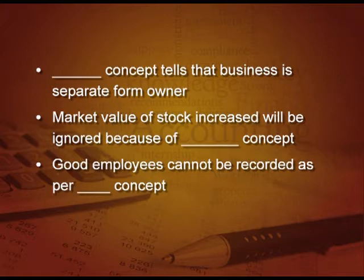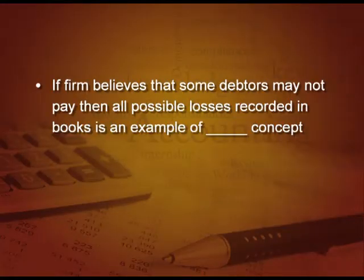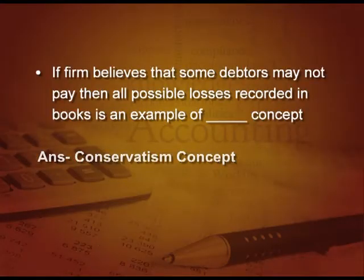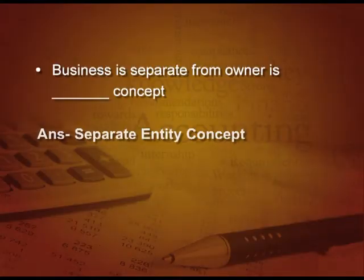Good employees cannot be recorded as per which concept? Yes, it is the money measurement concept. If a firm believes some debtors may not pay, then recording all possible losses in the books is an example of which concept? The crux word is 'all possible losses' — it is the conservatism concept, because we record all possible losses but never record profits. And again, business is separate from owner refers to the separate entity concept.